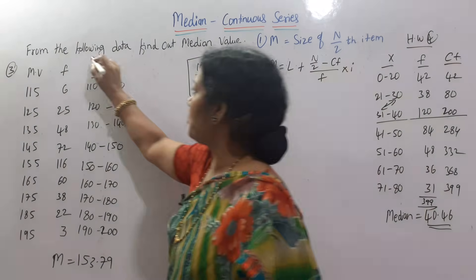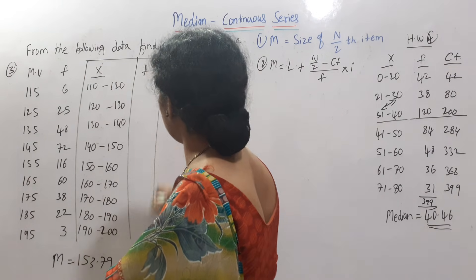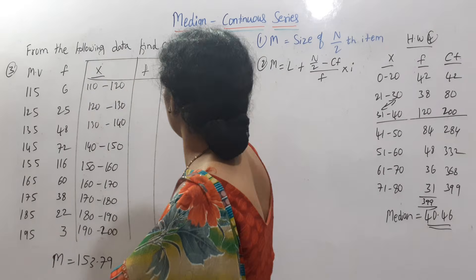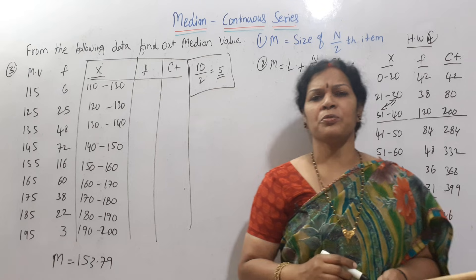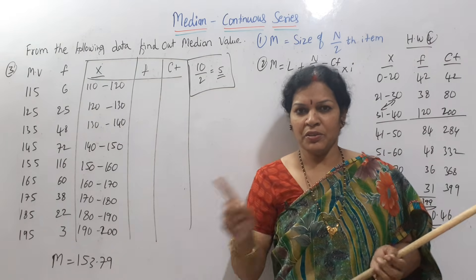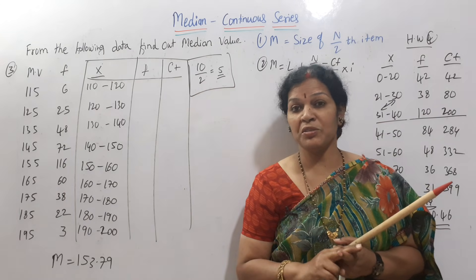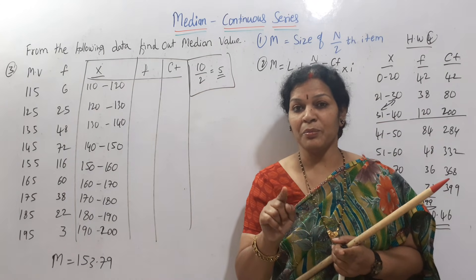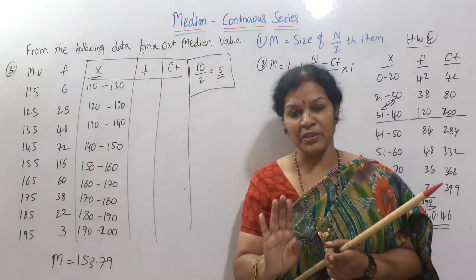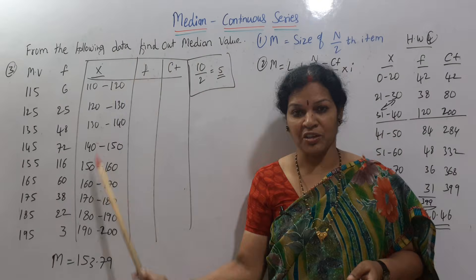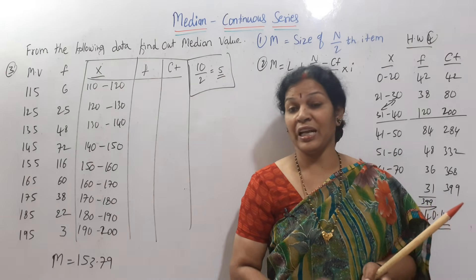So we use the table. We will increase our frequency and use these three tables, then leave the formula. From the first formula: m is equal to size of n by 2. The second formula: m is equal to L plus (n by 2 minus cf) by f into i. The answer to this problem is 153.79.